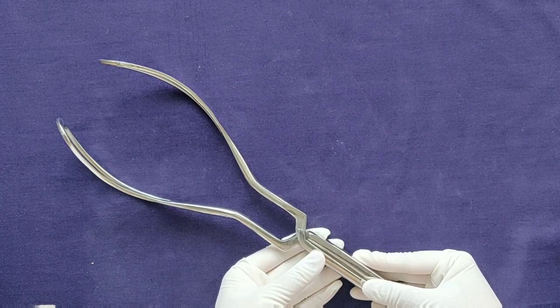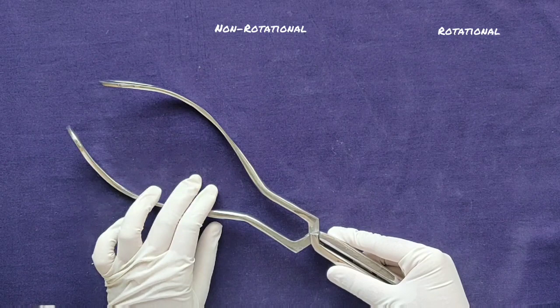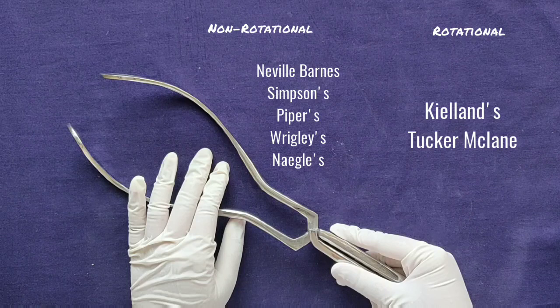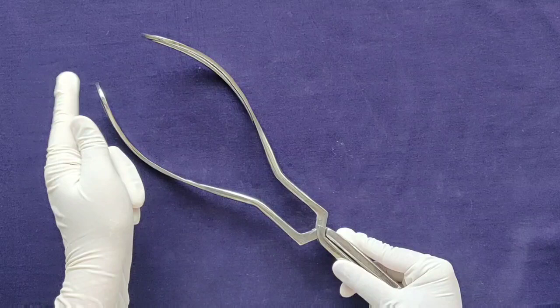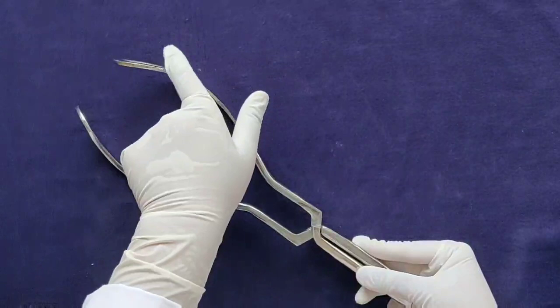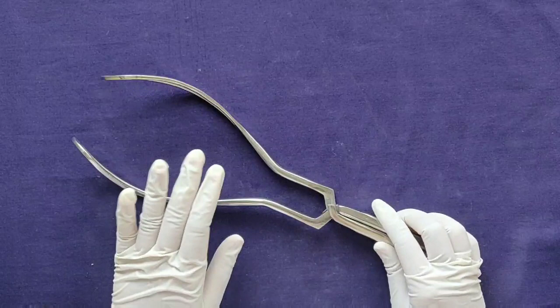Forceps are mainly divided into two types: non-rotational forceps and rotational forceps. Examples of non-rotational forceps include Neville-Barnes, Simpson, Pipers, Riddies, and Naegele's. Rotational forceps include Kielland's and Takah-Mathlin. Non-rotational forceps have a more pronounced pelvic curve and a fixed lock, whereas rotational forceps have a less pronounced pelvic curve and a sliding lock to allow adjustment for rotation.